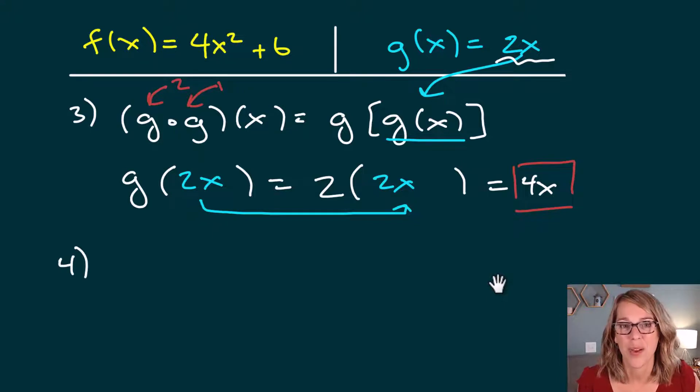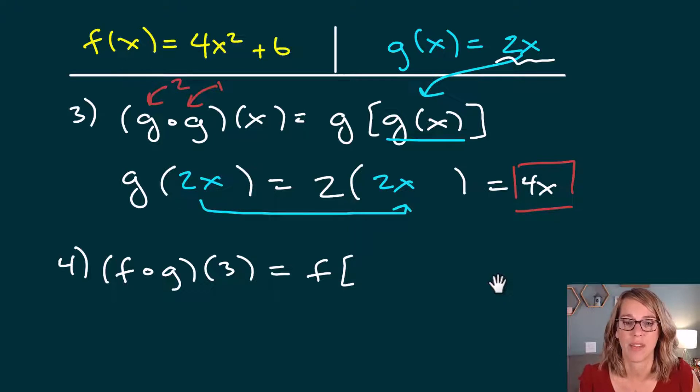For number 4, let's go ahead and do a composition at a number. So let's do f composed with g of 3. So I know that this is going to be rewritten as f of g of 3. I'm going to write this in blue. g of 3.